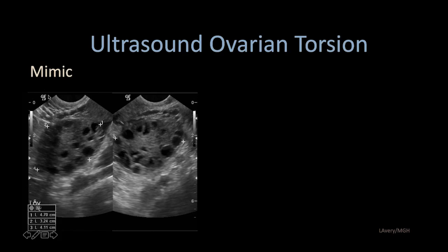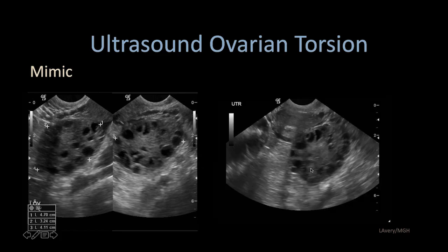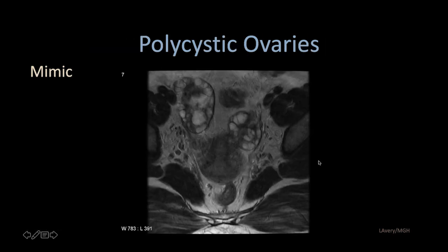Here is another enlarged ovary over 4 centimeters with multiple small follicles. The stroma is fairly homogeneous in echo texture, and the contralateral side had a similar appearance. On MRI, both ovaries are in normal position with multiple tiny follicles — this is polycystic ovarian disease and not ovarian torsion. This is a symmetric finding with no free fluid or compromise of vasculature.